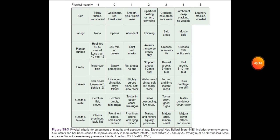For male genitals: scrotum flat and smooth carries negative one point. Scrotum empty with faint rugae carries zero points. Testes in upper canal with rare rugae carries one point. Testes descending with few rugae carries two points. Testes down with good rugae carries three points. Testes pendulous with deep rugae carries four points.